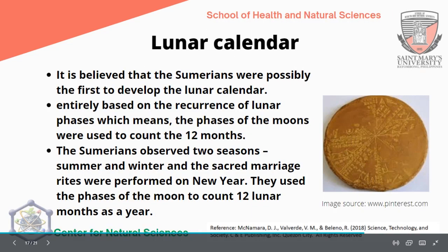The lunar calendar — it is believed the Sumerians were possibly the first to develop the lunar calendar, using the moon as the basis for their calendar. It is entirely based on the recurrence of lunar phases to count 12 months. One complete cycle of the phases of the moon equals one month. The Sumerians observed two seasons — summer and winter — and sacred marriage rites were performed on New Year. They used the phases of the moon to count 12 lunar months as a year, very similar to our existing Gregorian calendar.